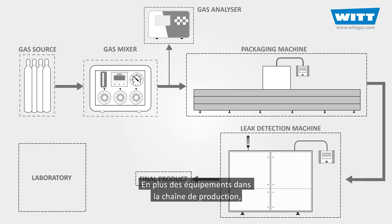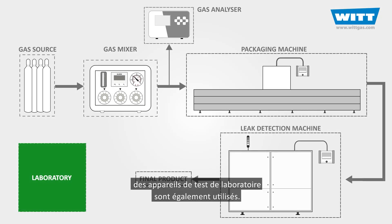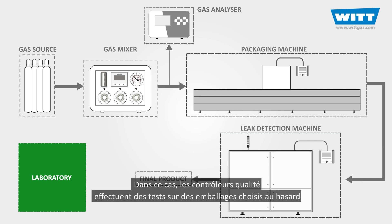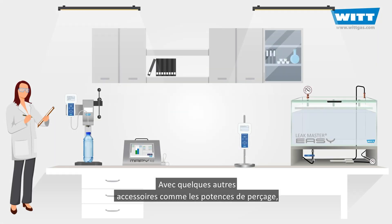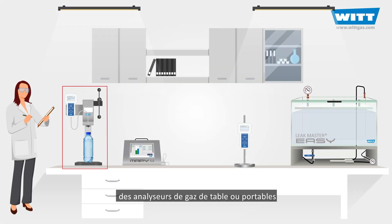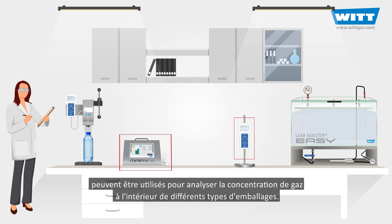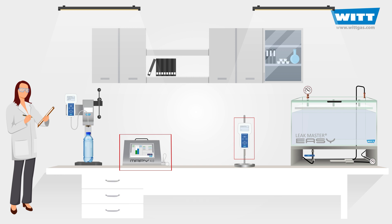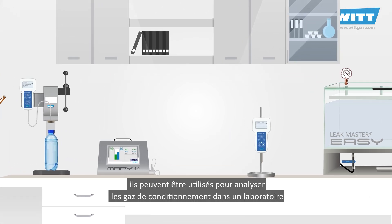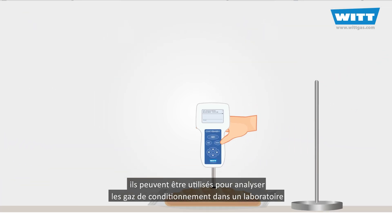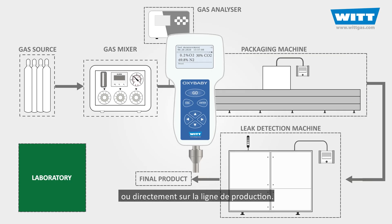In addition to the mentioned equipment in the production line, laboratory testing devices are used as well. Quality control experts perform tests on randomly chosen packages to check the quality and suitability for sale. Along with accessories like can piercers, tabletop or portable gas analysers can be used for analysing the gas concentration inside different kinds of packages. Portable analysers are highly versatile and very easy to use — they can be used in a laboratory or directly on the production line.